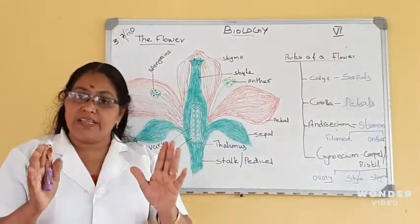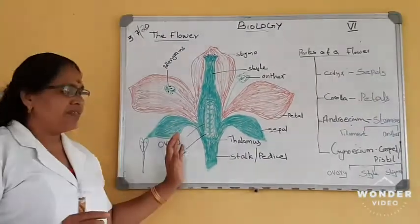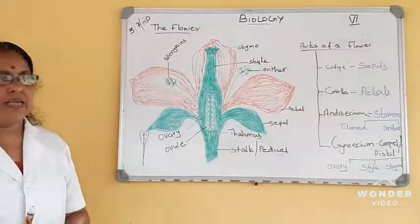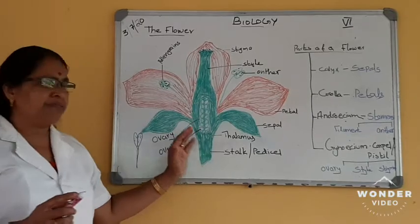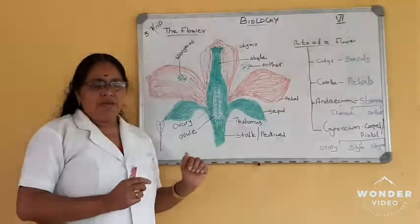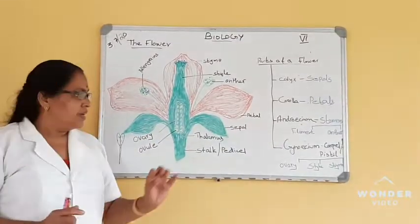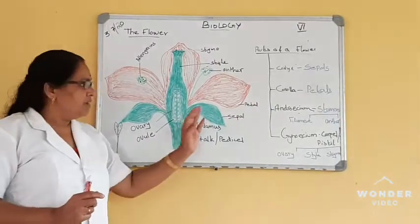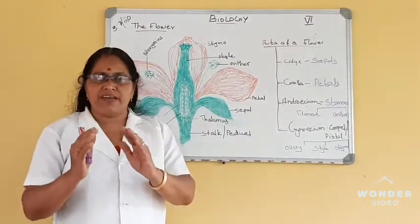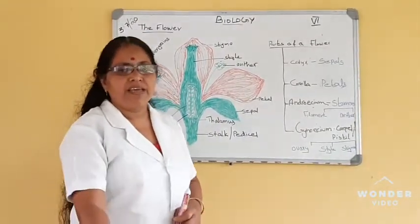If a flower contains all these parts, then we can say that is a complete flower. And if the flower is not having any one of the parts, then that is an incomplete flower. In the case where both androecium and gynoecium are present in the same flower, that flower is called a bisexual flower. Androecium is the male part and gynoecium is the female part. If only one is present, then that flower is a unisexual flower.